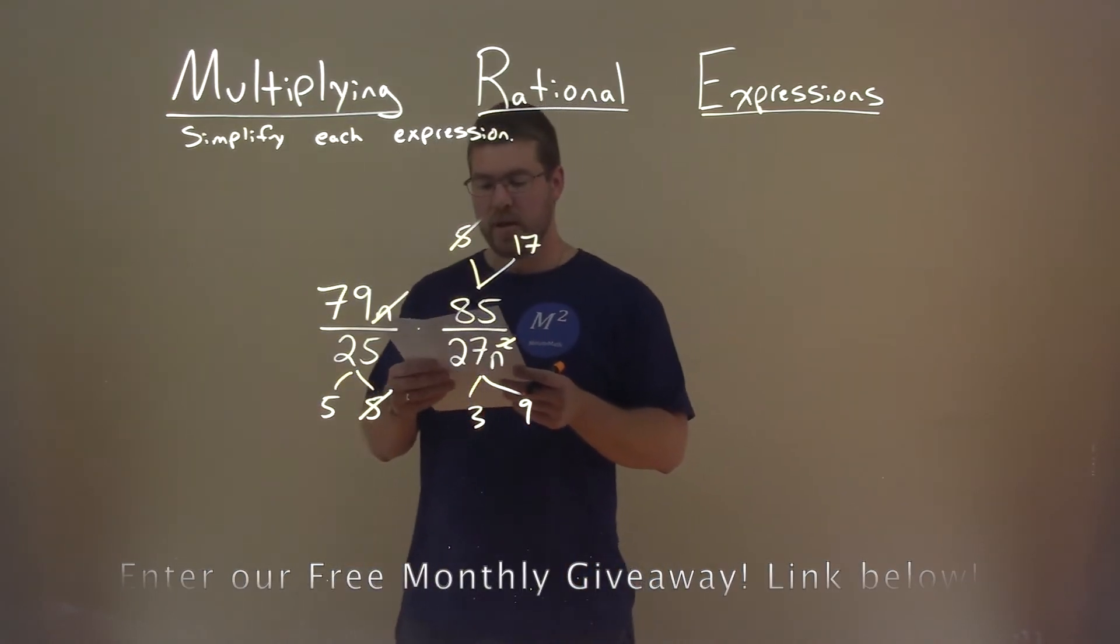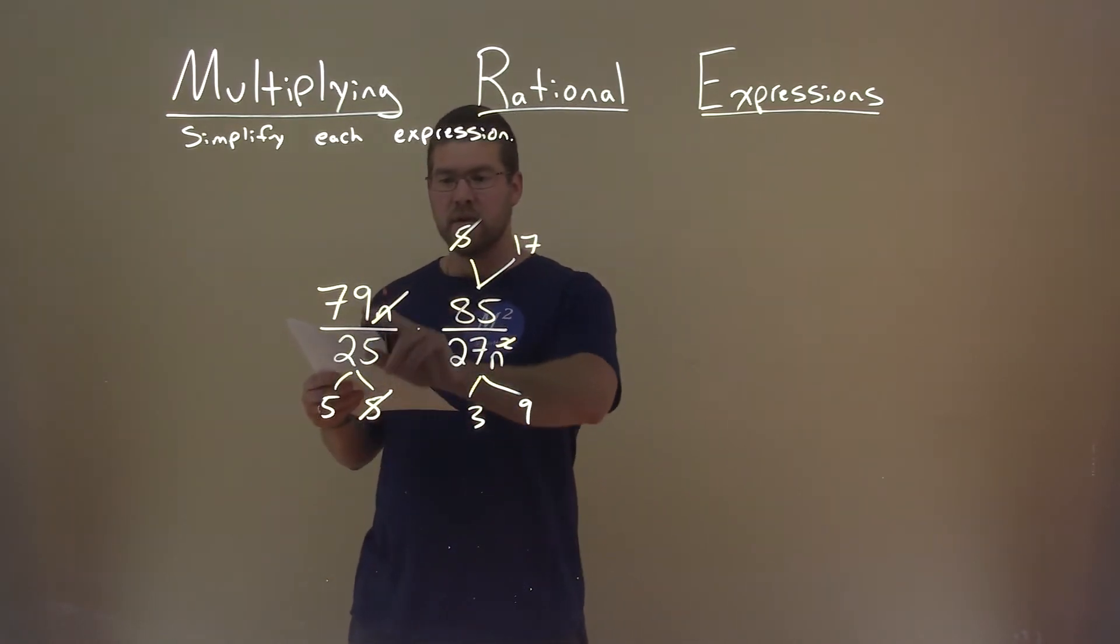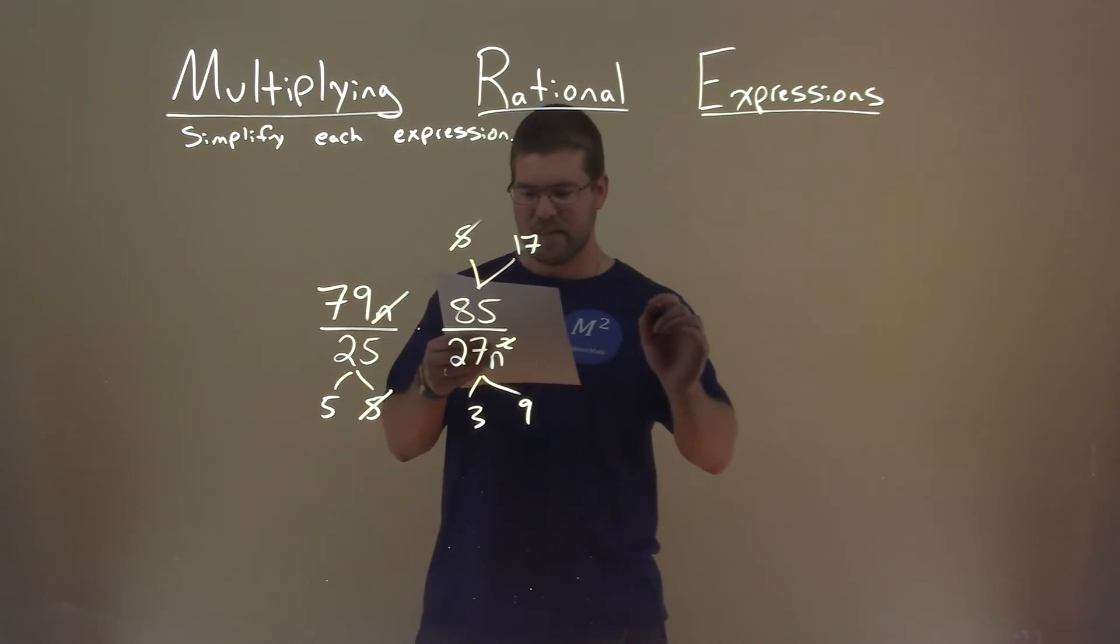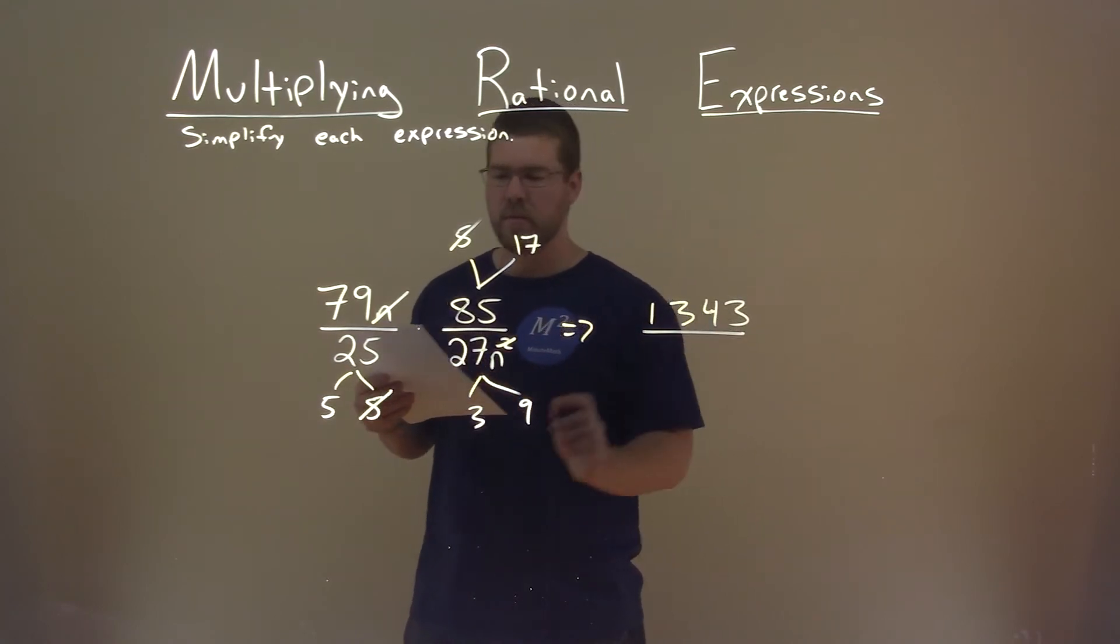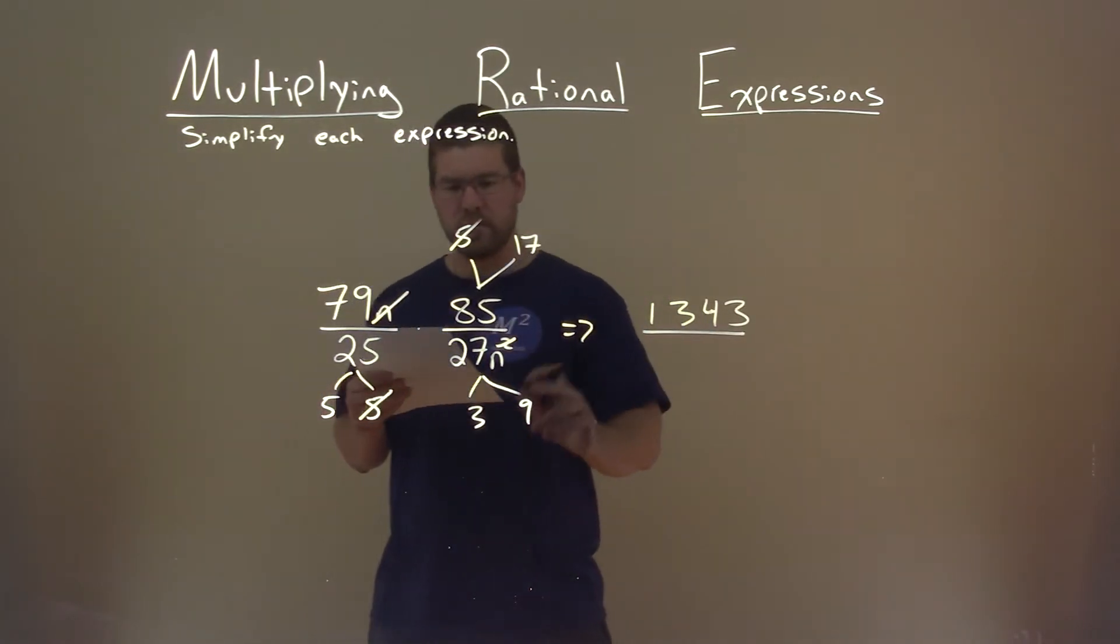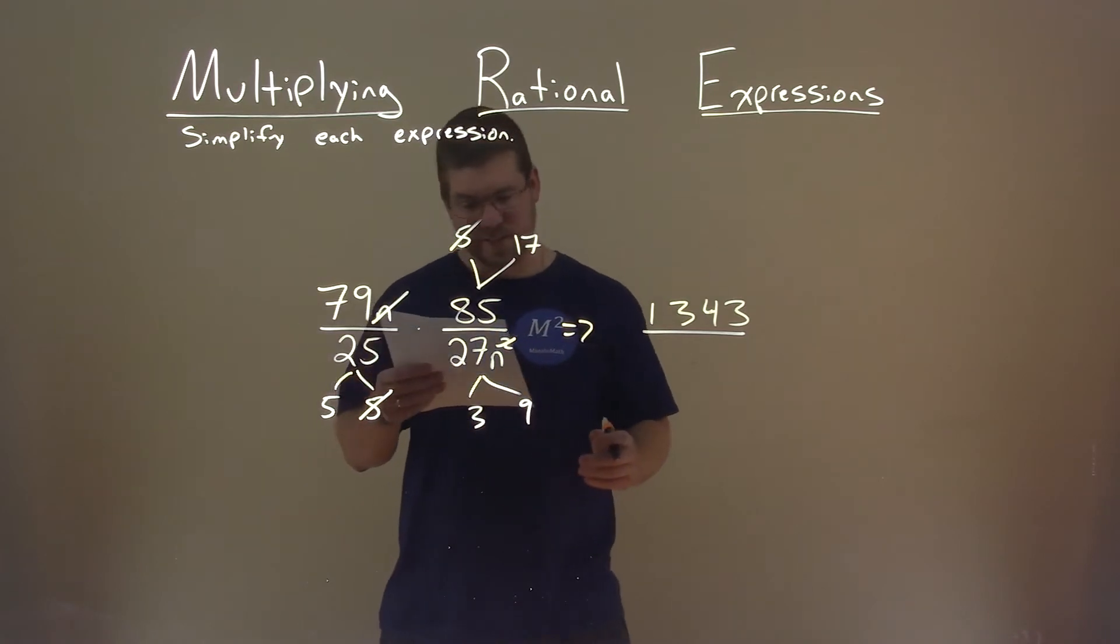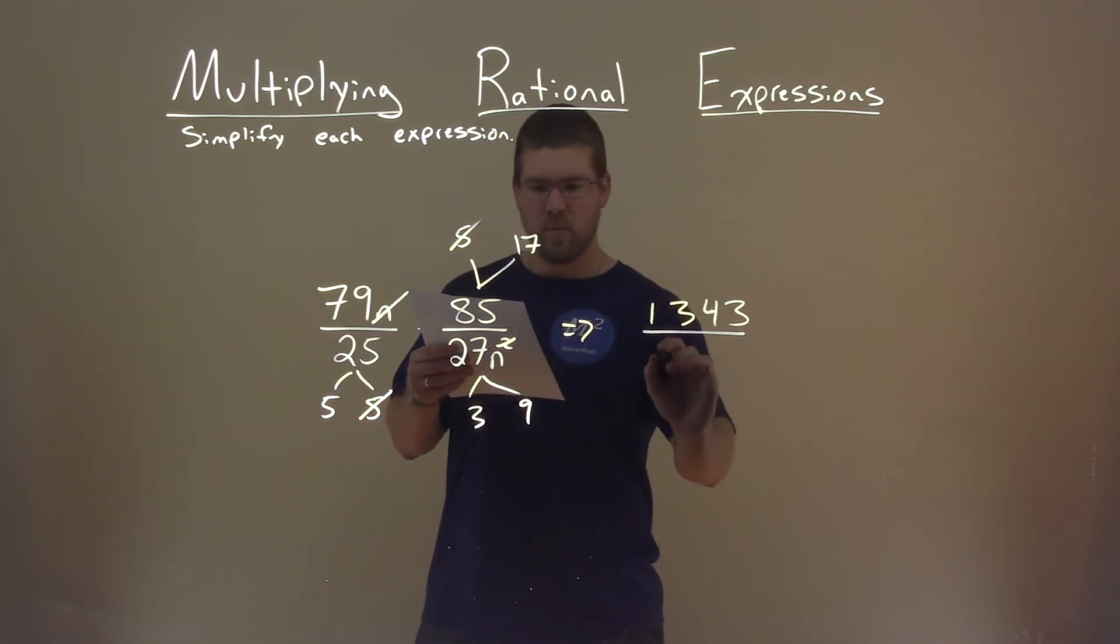And so now we have to multiply across. 79 times 17 is 1,343. We're going to put that over 5 times 3 times 9, or really 5 times 27 here, is 135.